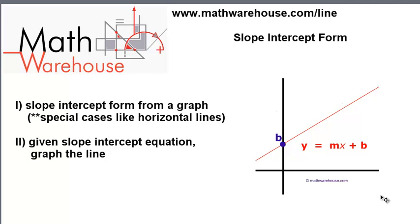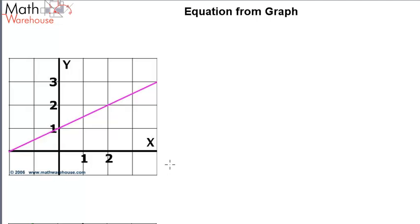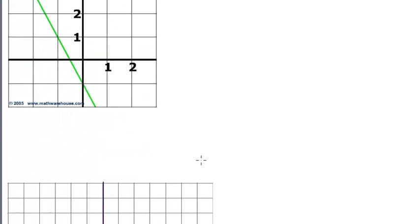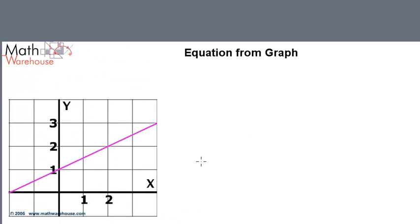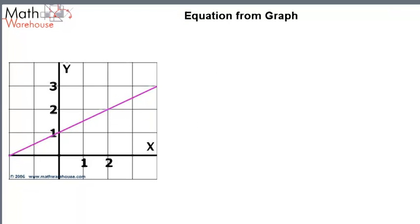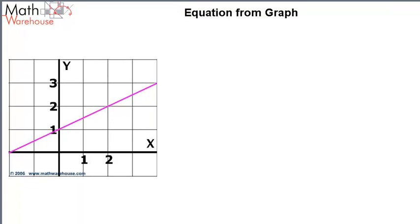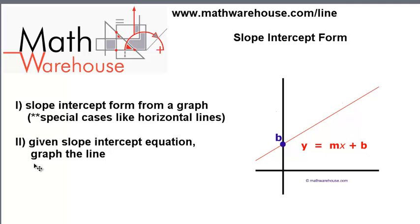The goal of this tutorial is to look at and to be able to do two types of problems. One, produce the slope-intercept form equation from a graph. To give you an example, we're going to look at these problems here. Given these graphs, I'm going to lead you through how you could come up with the slope-intercept form equation. Two, given the equation, produce the graph. So we want to be able to go both ways.